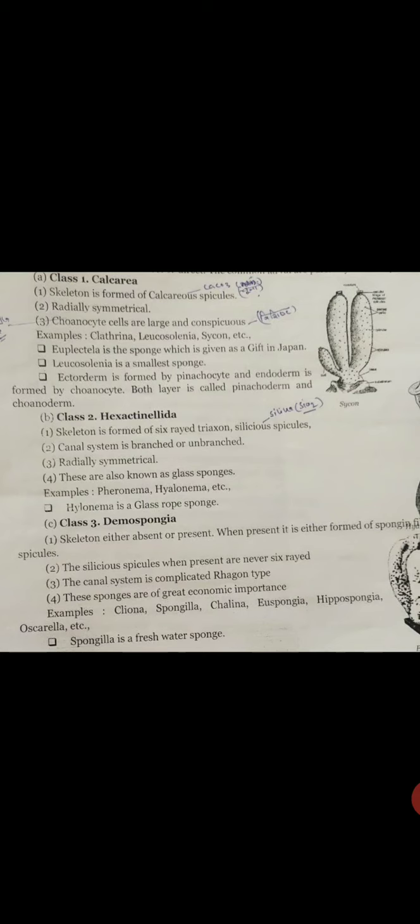Body organization - what is it? Asconoid, syconoid, or leuconoid. Three types are there, any of these may be present.